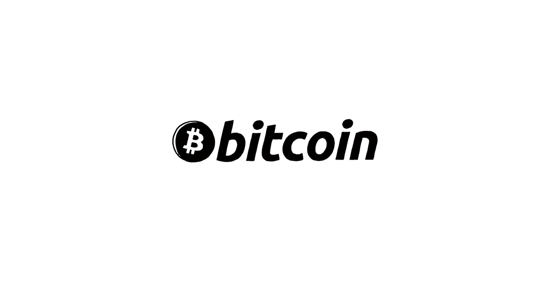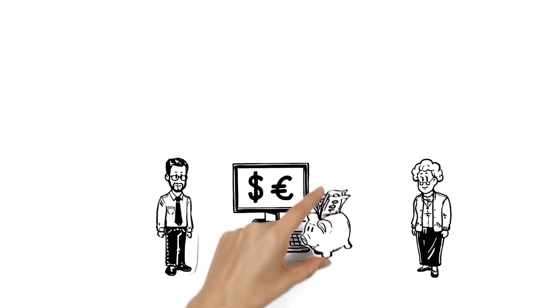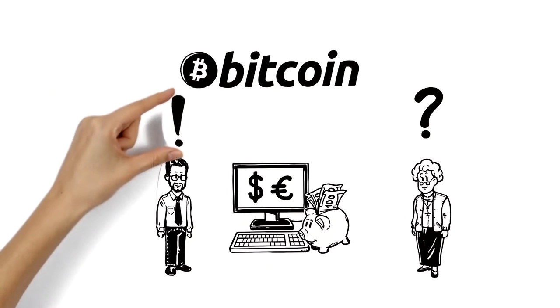Bitcoin, explained simply. This is Matthew. He works with online payment, and his grandmother Margaret has just begun banking online. She's heard of Bitcoin but doesn't know what it is. Matthew can explain.